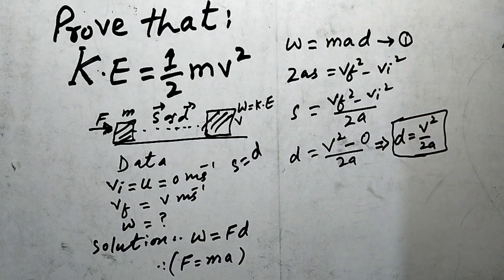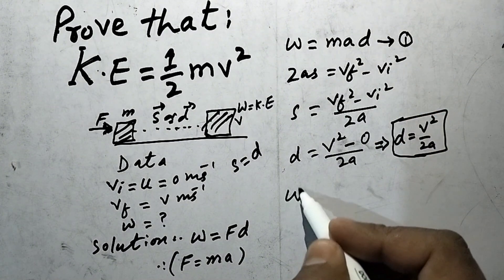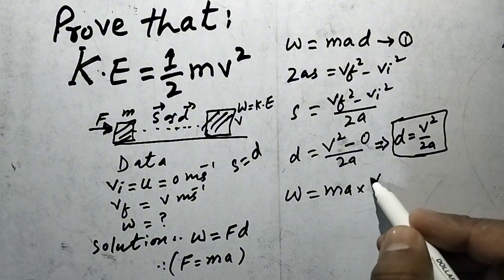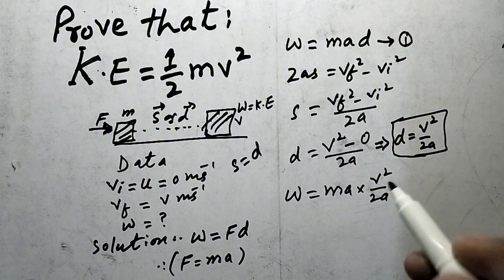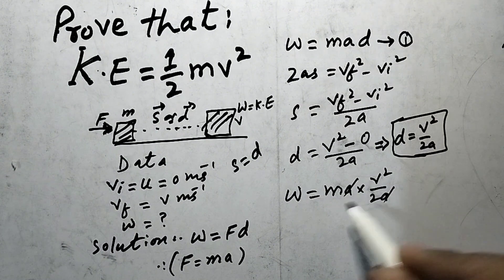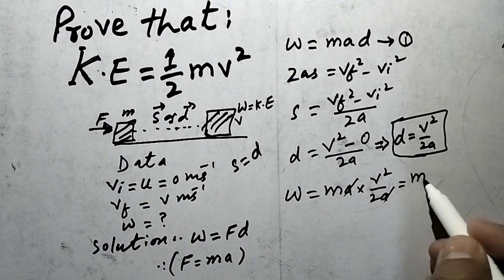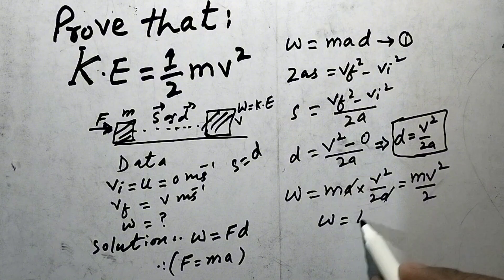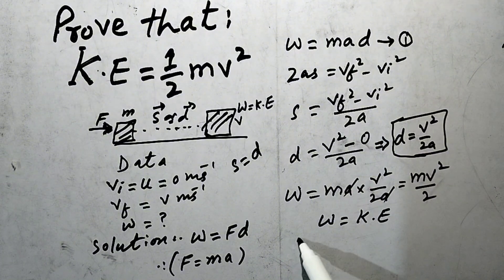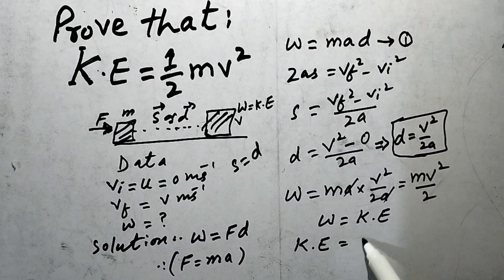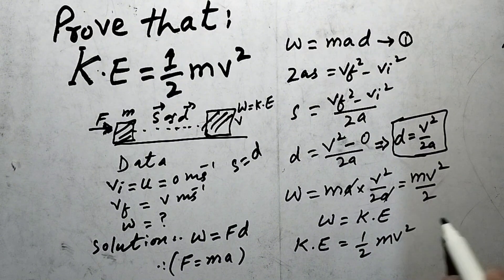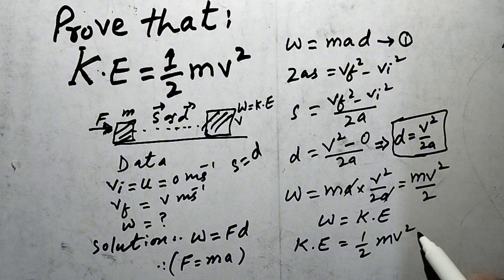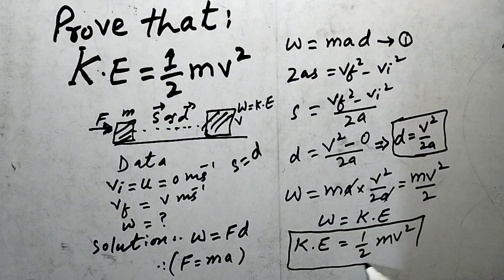Putting the value of D into equation number 1, W equals m into a into V square upon 2a. The a cancels with a, giving W equals mv square upon 2. Since work is done in the form of kinetic energy, kinetic energy equals 1 upon 2 mv square. This is our required condition.